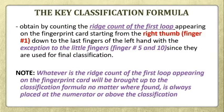Now let us proceed to key classification. The key classification is obtained by counting the ridge count of the first loop appearing on the fingerprint card, starting from the right thumb or finger number 1 down to the last fingers of the left hand, with the exemption of the little fingers — finger number 5 and 10 — since they are reserved for final classification.